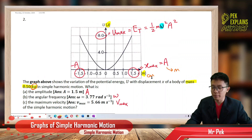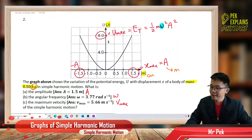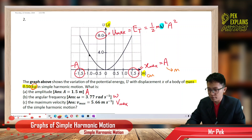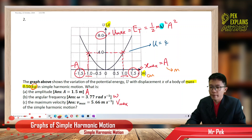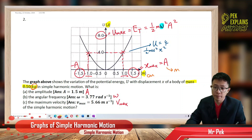Be careful with units — displacement can be in meters, cm, or mm, and energy in Joules. Another approach: you can also use an intermediate point on the graph — for example, at a displacement of 1 meter, the energy is 4 Joules.